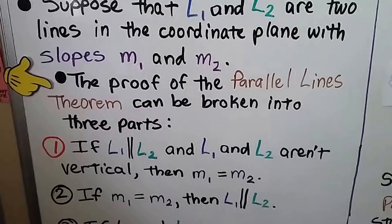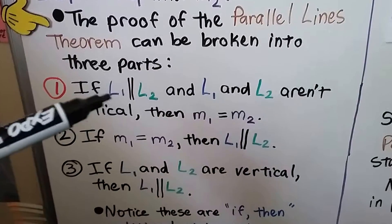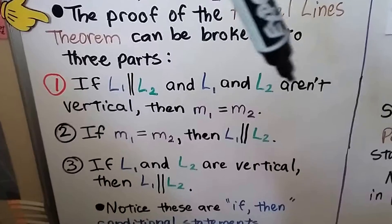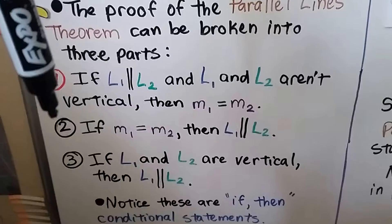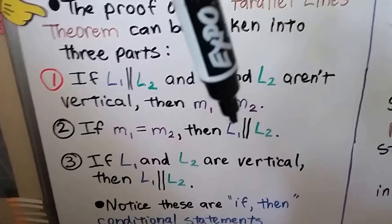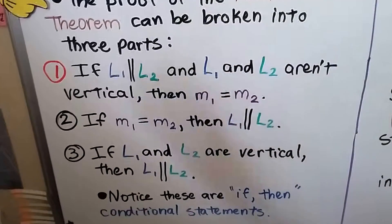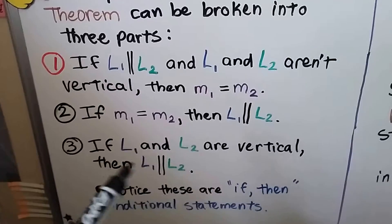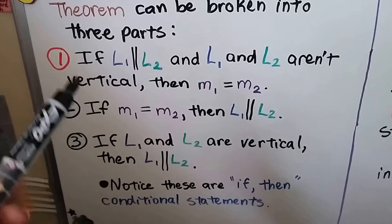The proof of the parallel lines theorem can be broken into three parts. The first: if the first line is parallel to the second line and neither line is vertical, then the first slope equals the second slope. The second: if the first slope equals the second slope, then the first line is parallel to the second. The third: if the first and second lines are both vertical, then they are parallel. Notice these are if-then conditional statements.